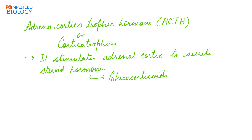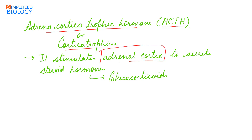Adrenocorticotropic hormone, also known as ACTH or corticotropin, stimulates the adrenal cortex to secrete its steroid hormones — that is, glucocorticoids.